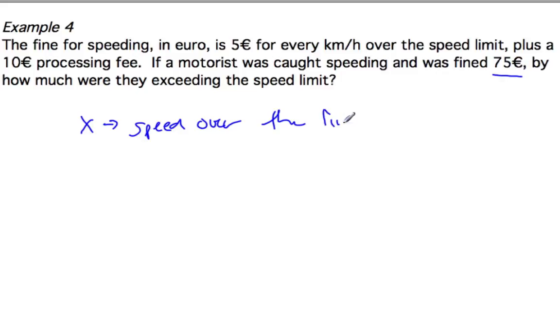Let's say x, and we'll say speed over the limit. So if my speed limit is 100 kilometers per hour, and I'm traveling 121 kilometers per hour, that means x would be 21, because it's over the speed limit. So let's see if we can make some kind of equation up for this scenario.